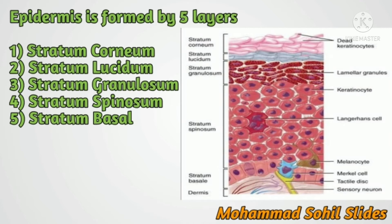Fifth and last, stratum basale, which is a thick layer. The cells are made up of polygonal cells superficially and columnar or cuboidal epithelial cells in the deeper parts. Newly formed cells move continuously towards the stratum corneum. The stem cells which give rise to new cells are known as keratinocytes. Other cell types present in stratum basale are melanocytes and Langerhans cells.